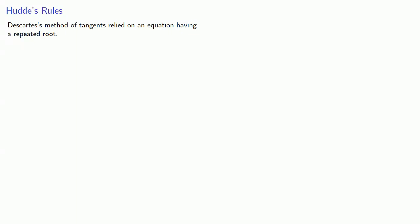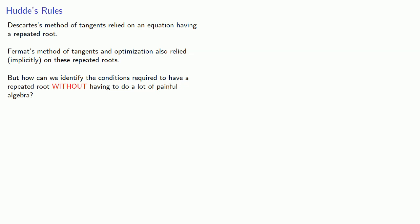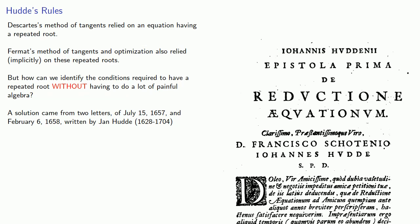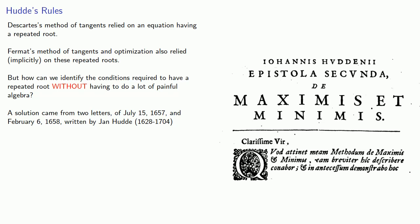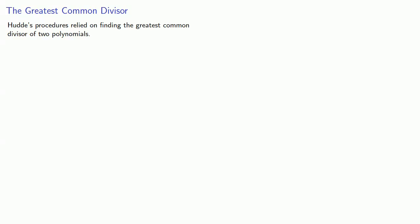Descartes' method of tangents relied on an equation having a repeated root. Fermat's method of tangents and optimization also relied implicitly on these repeated roots. But how can we identify the conditions required to have a repeated root without having to do a lot of painful algebra? A solution came from two letters of July 15, 1657 and February 6, 1658, written by Jan Hudde.